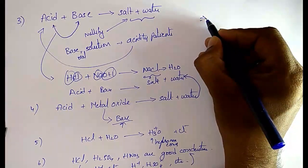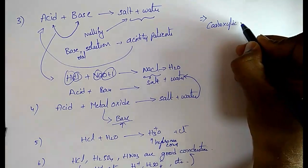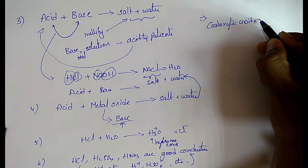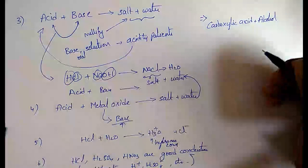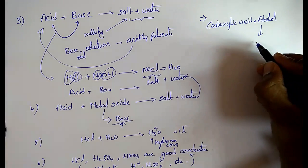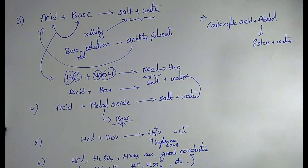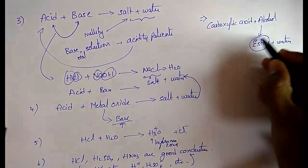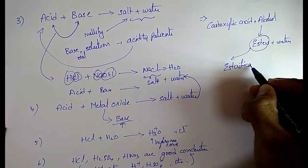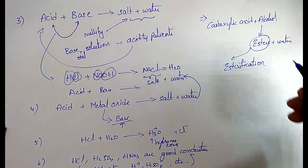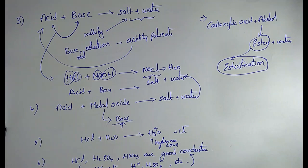One more important property: if carboxylic acid combines with alcohol, then it will release ester plus water. This process is called esterification. Whenever carboxylic acid combines with alcohol, ester is released — this process is called esterification.